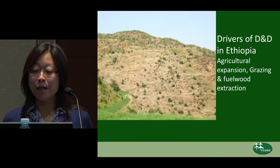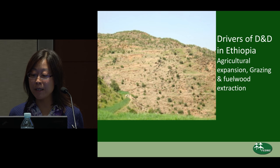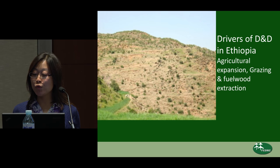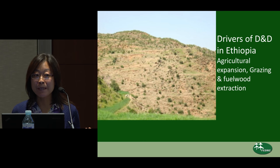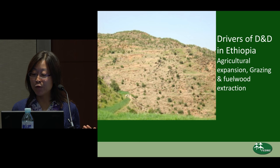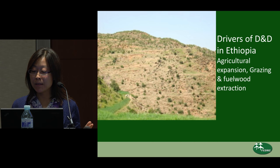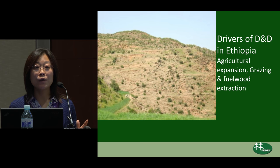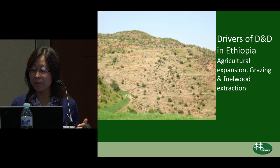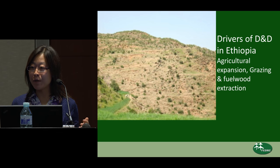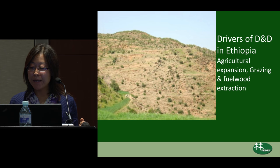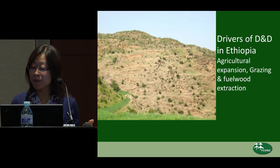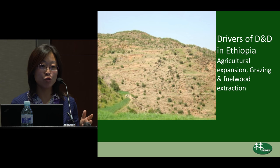A rapidly growing population in Ethiopia — over 90 million, of which 80% depends on the land for food — is a key driver. However, farm sizes of households are very small and unproductive, about less than 0.5 hectares for each household. As a result, agricultural expansion causes deforestation, and grazing and fuelwood extraction cause forest degradation in Ethiopia.